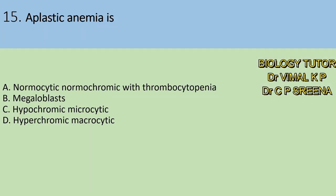Fifteenth question: aplastic anemia is — A. Normocytic normochromic with thrombocytopenia, B. Megaloblastic, C. Hypochromic microcytic, D. Hyperchromic microcytic. Here answer is A — aplastic anemia is normocytic normochromic with thrombocytopenia.